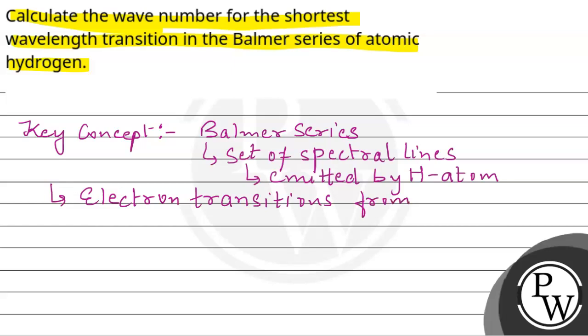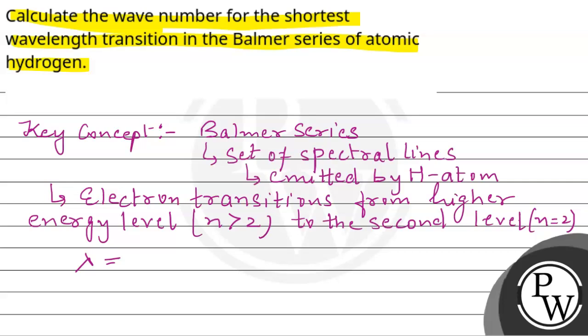From the higher energy level, which is the second level, to the second level, that is using the Rydberg formula. Rh multiplied by 1 divided by 2 raised to power 2 minus 1 divided by n raised to power 2.